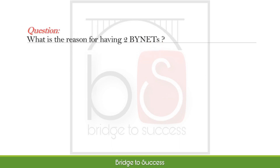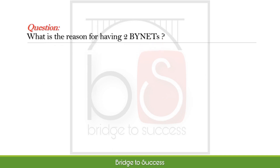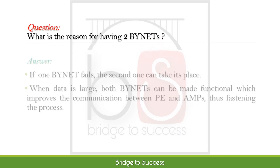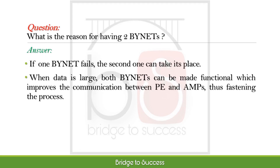What is the reason for having two Bynets? If one Bynet fails, the second one can take its place. When data is large, both Bynets can be made functional, which improves the communication between PE and AMPs, thus fastening the process.